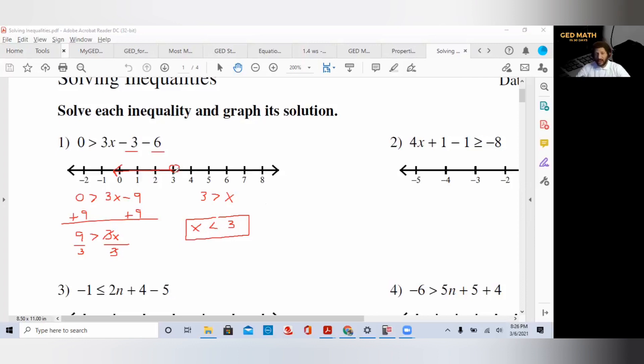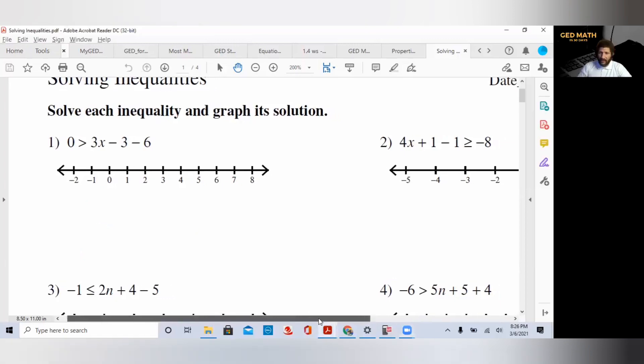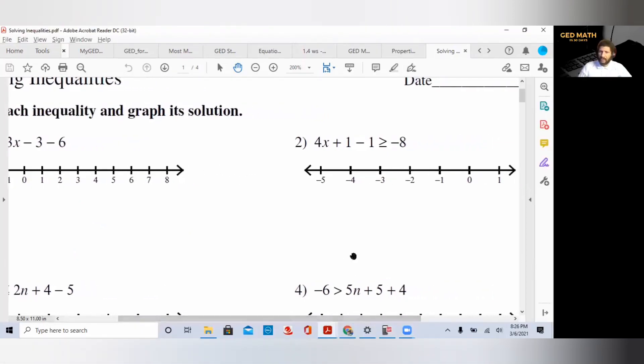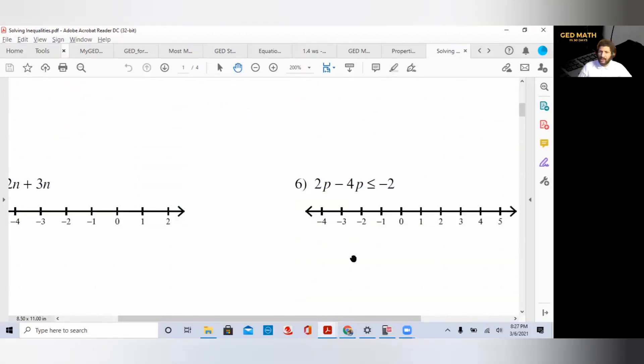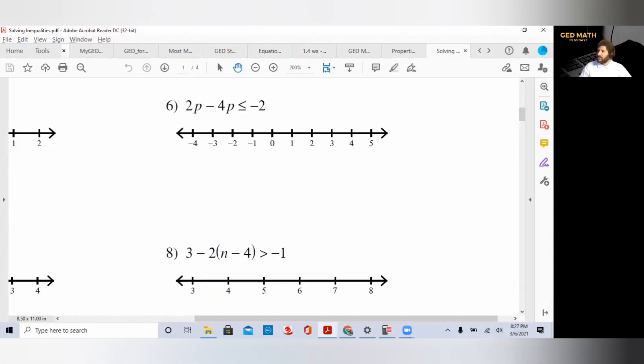If you want to go back over that, pause and rewind the video. Now we're going to the second example, number 6. We have like terms, so we have to combine them. 2 minus 4 is negative 2, so we have negative 2p less than or equal to negative 2.